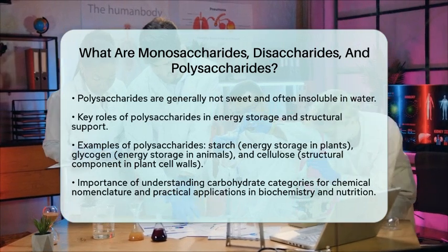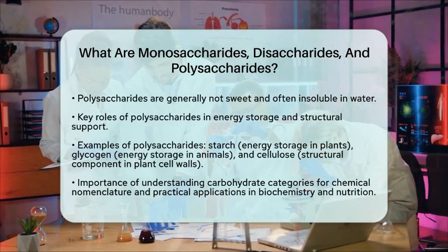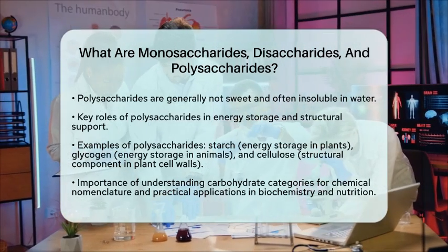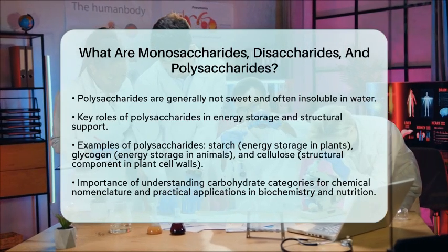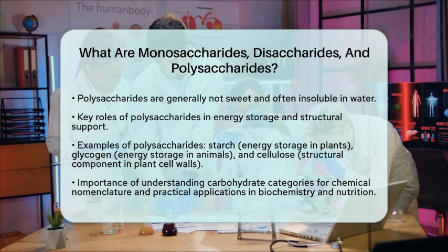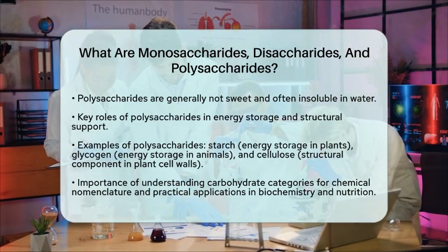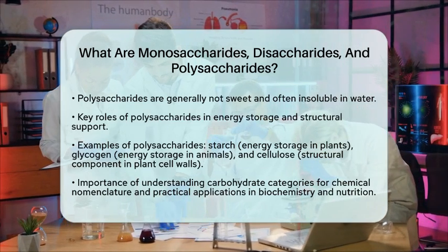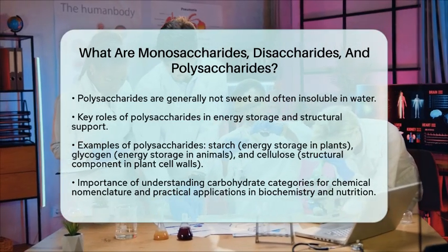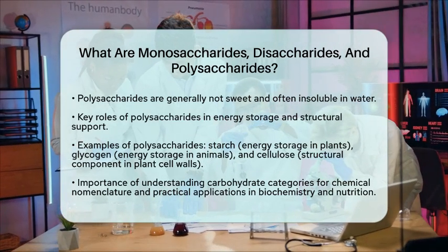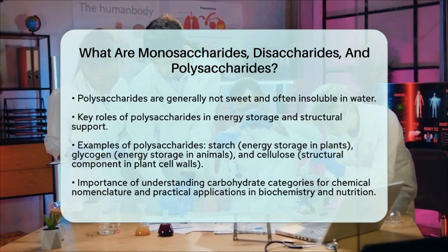In the context of chemical nomenclature, understanding these categories helps in identifying and naming complex carbohydrates based on their composition and structure. This knowledge is essential for both research and practical applications in fields such as biochemistry and nutrition. By grasping the differences between monosaccharides, disaccharides, and polysaccharides, you can better appreciate the role carbohydrates play in our diet and health.